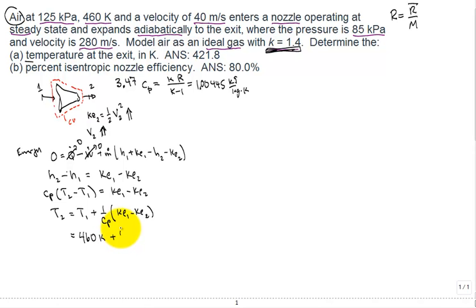Kinetic energy one is velocity one, which is coming in at 40 squared, minus our exit speed they give us, 280 squared. Both of those have units of meter squared per second squared.